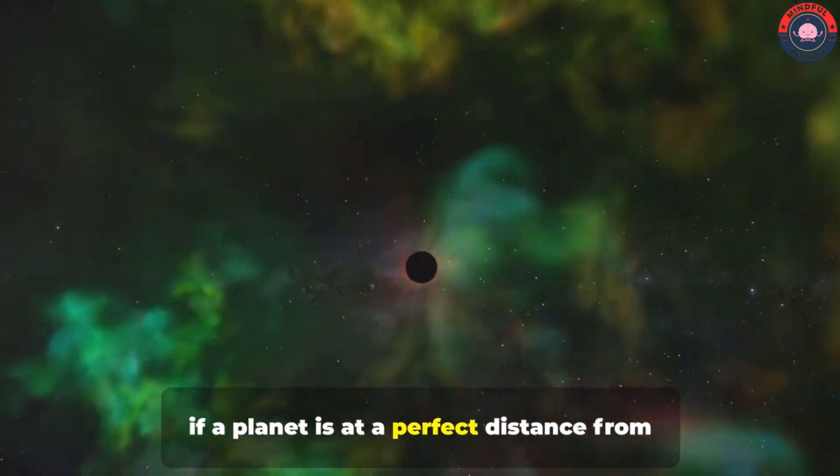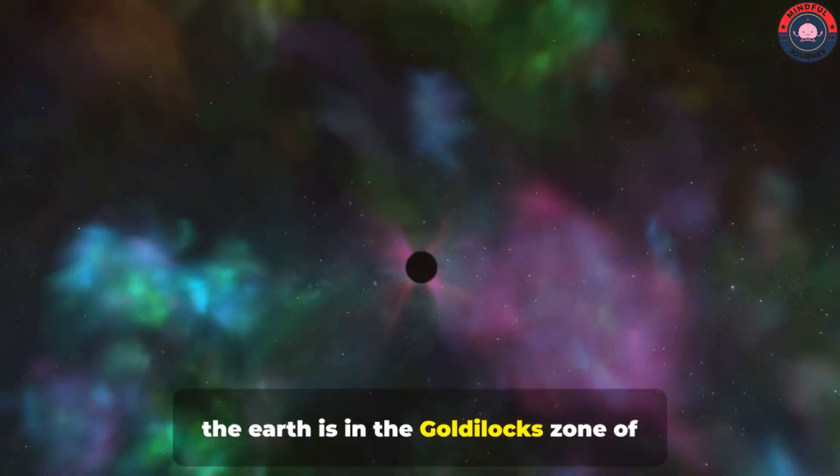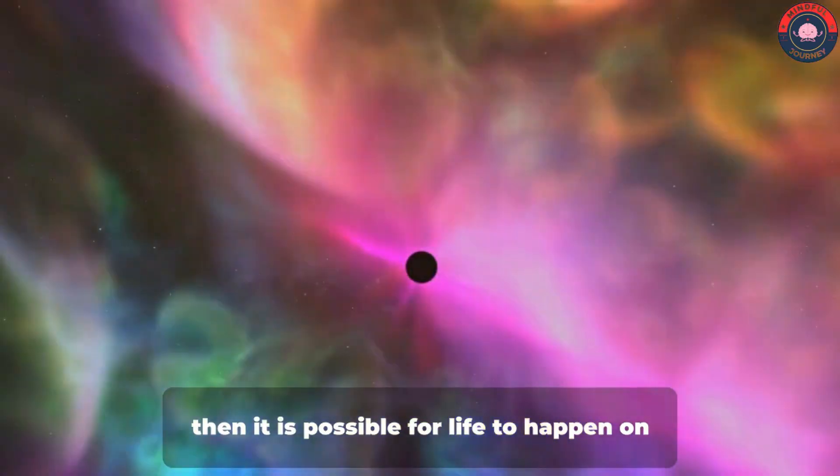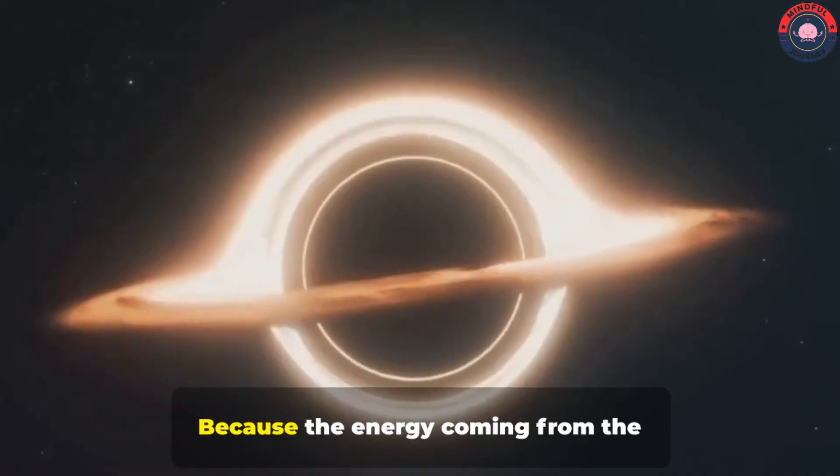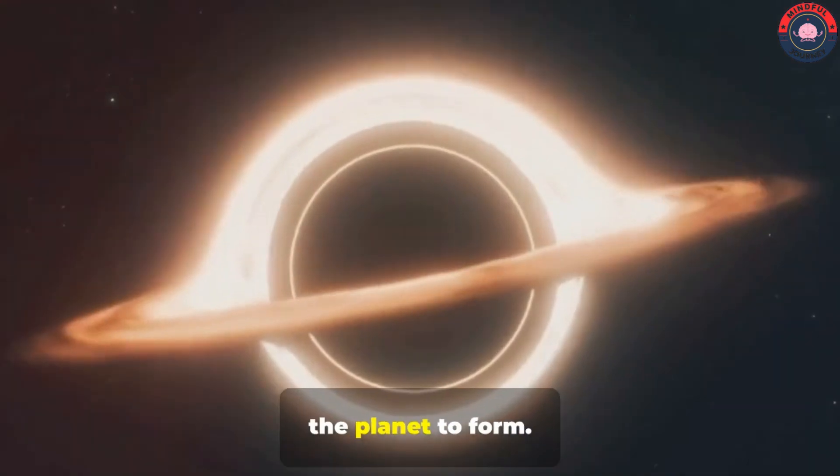Now, if a planet is at a perfect distance from this disk, i.e. the Earth is in the Goldilocks zone of the sun like today, then it is possible for life to happen on that planet. Because the energy coming from the accretion disk will catalyze anything in the planet to form.